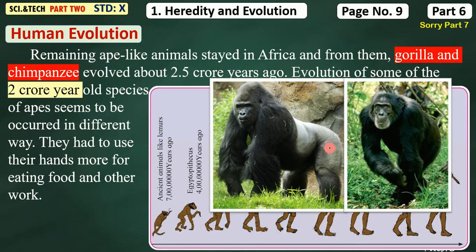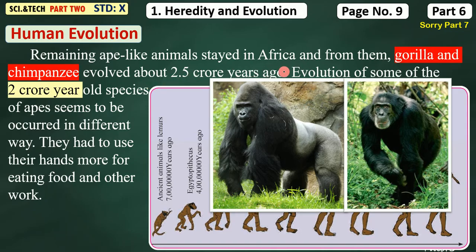The ape-like animals that stayed in Africa evolved about 2.5 crore years ago. Students, you will make a list and a chart for these. Evolution of some species of ape-like animals seems to have occurred in different ways about 2 crore years ago.